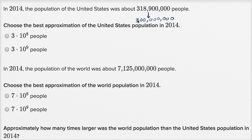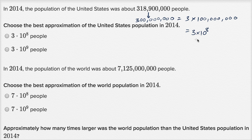this would go to 300 million. And 300 million is three times 100 million. And 100 million has eight zeros, so this is the same thing as three times 10 to the eighth power — which they have right over here. Three times 10 to the ninth would be three billion, almost 10 times as large. So we definitely want three times 10 to the eighth people — that's 300 million people, rounding to the nearest hundred million.